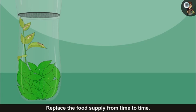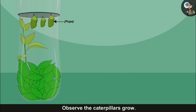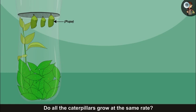Replace the food supply from time to time. It will take about two weeks for the caterpillar to become pupa. Observe the caterpillars grow. See how much each of them grows. Do all the caterpillars grow at the same rate?